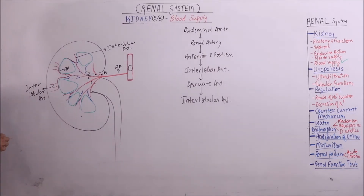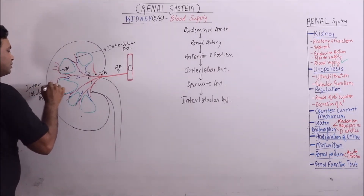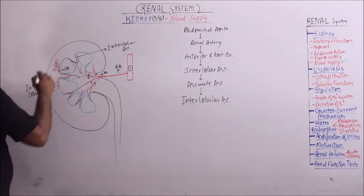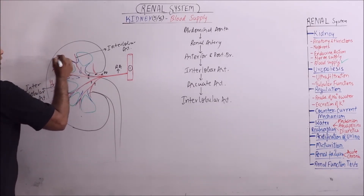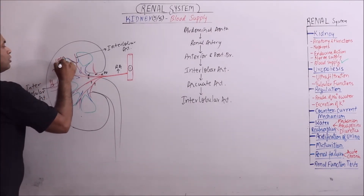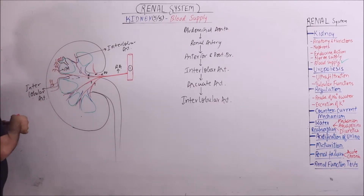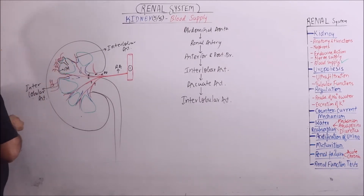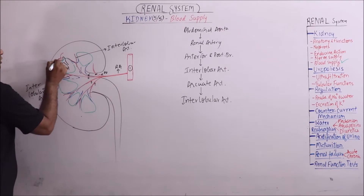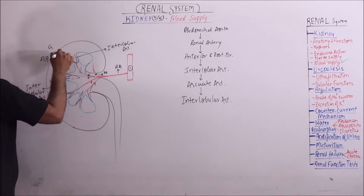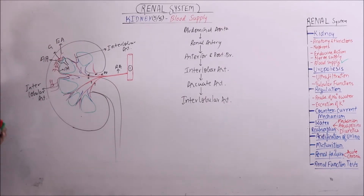These interlobular arteries give rise to many branches known as afferent arterioles. The afferent arteriole gives rise to the glomerulus, which is present in Bowman's capsule. The glomerulus again comes out of Bowman's capsule as the efferent arteriole.